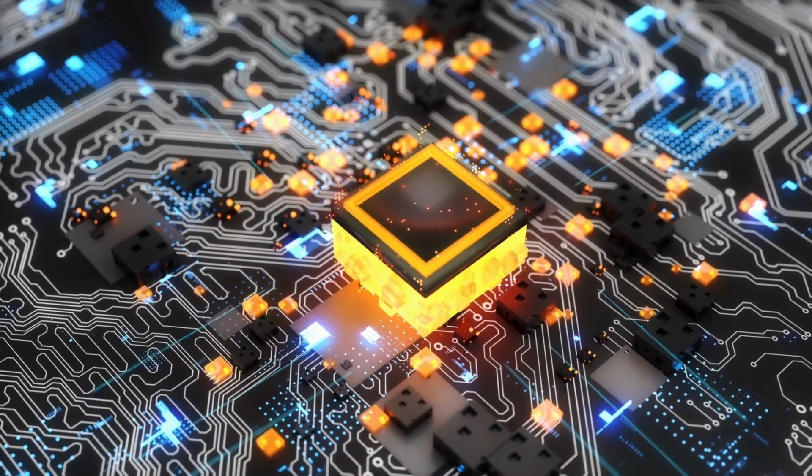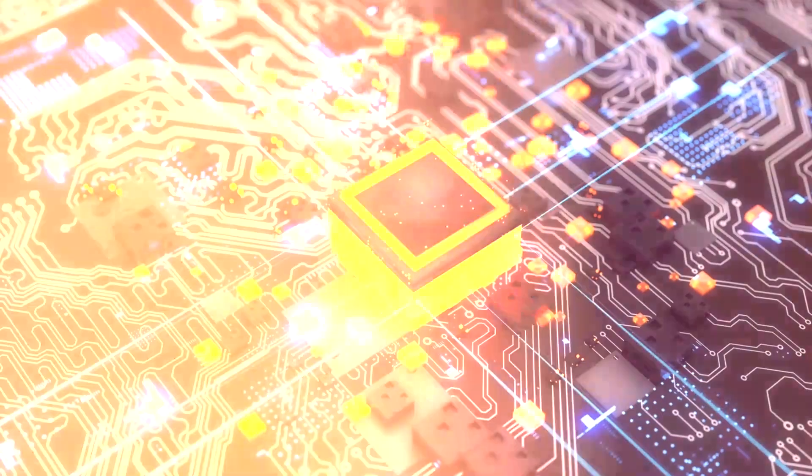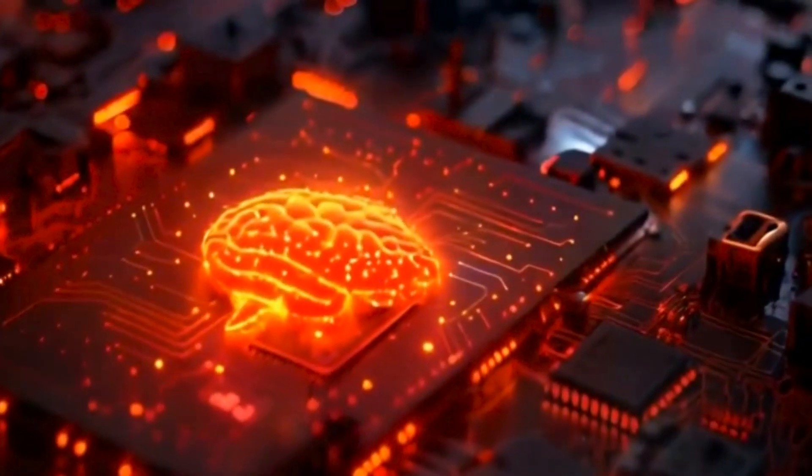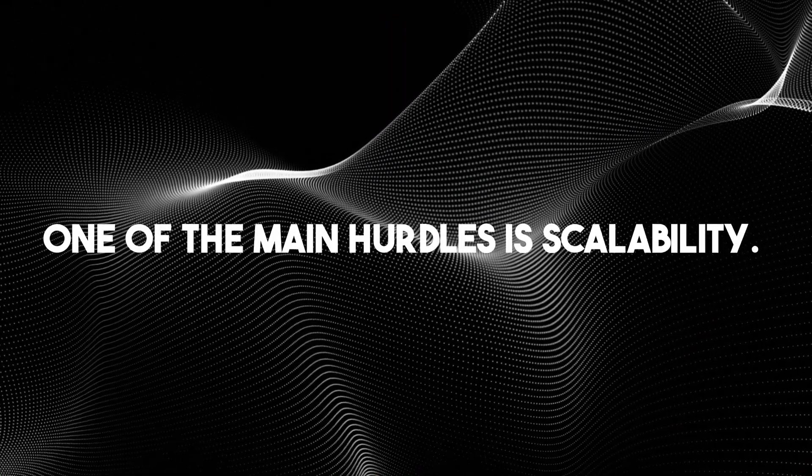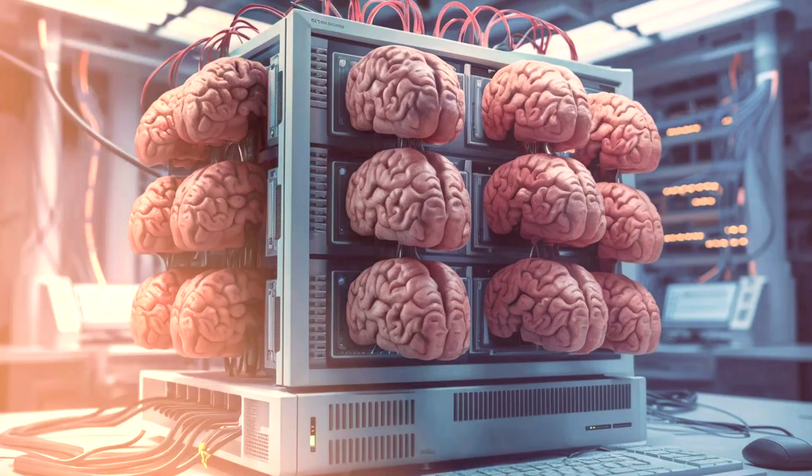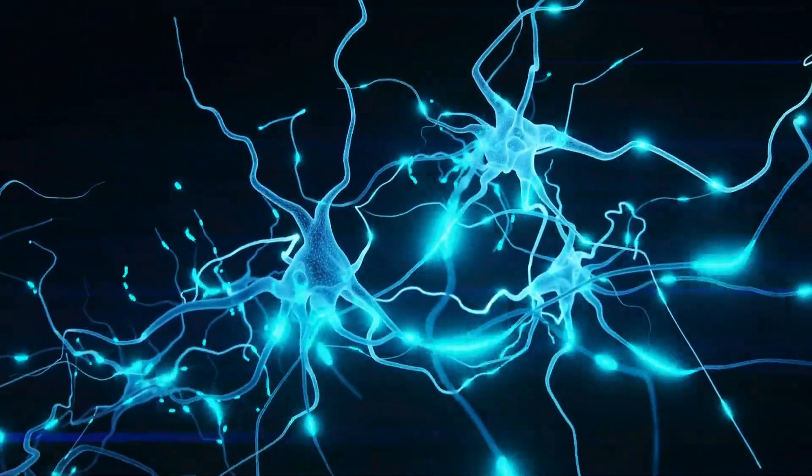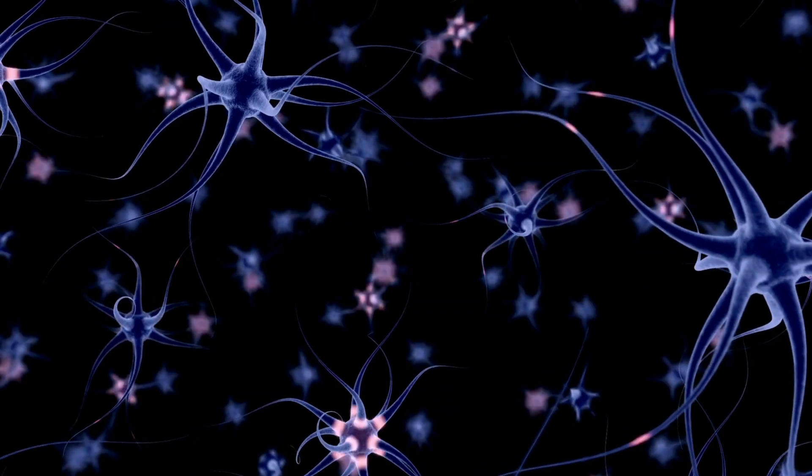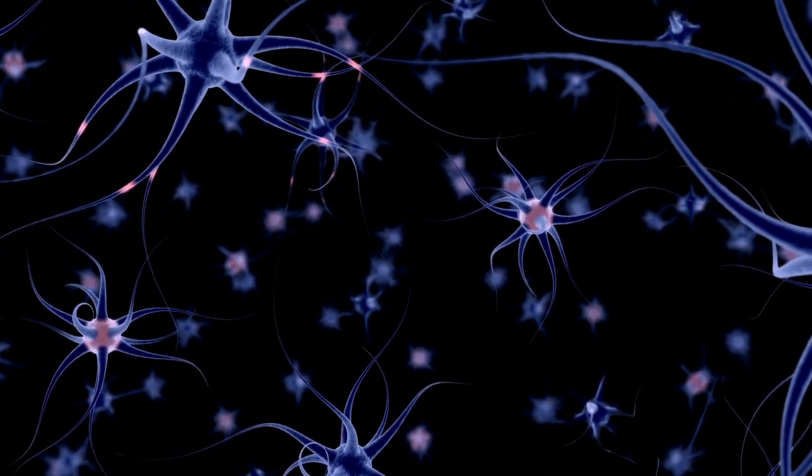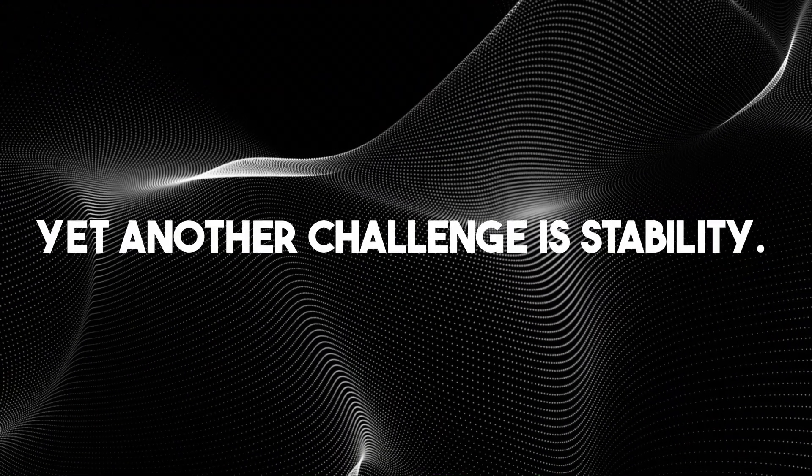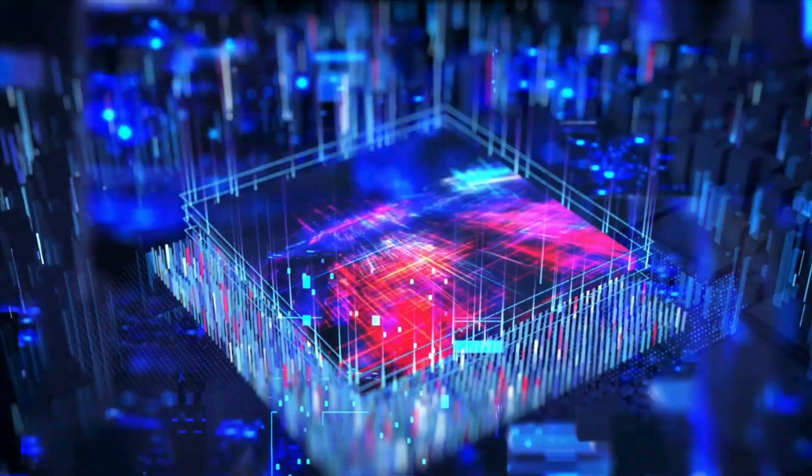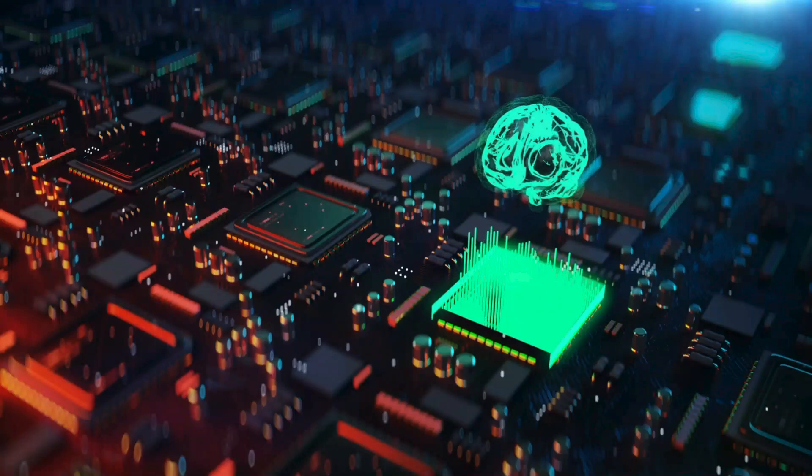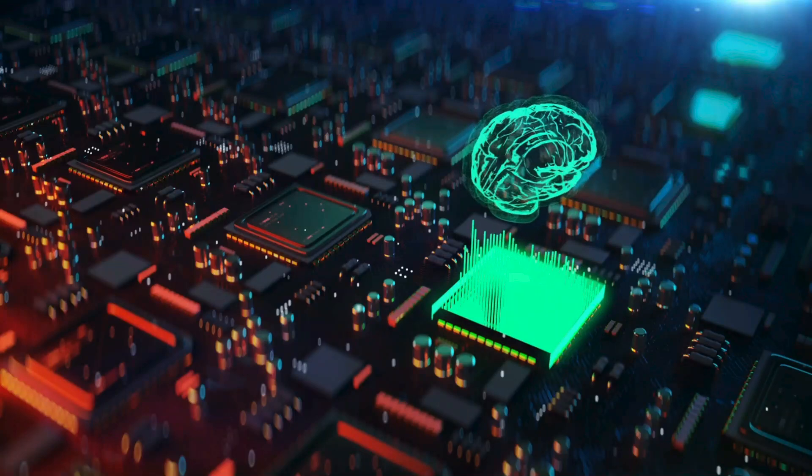As exciting as the NeuroPlatform is, it's important to remember this technology is still in its early stages. There are many challenges to overcome before biocomputers become a mainstream technology. One of the main hurdles is scalability. While the current system uses 16 brain organoids, scaling this up to the billions of neurons found in a human brain is a monumental task. Researchers will need to find ways to create larger, more complex networks of organoids while still maintaining precise control over the entire system. Another challenge is stability. As we mentioned, the current organoids have a lifespan of about 100 days. In order for biocomputers to become practical for everyday use, this lifespan will need to be significantly extended.